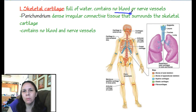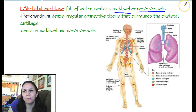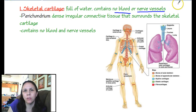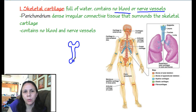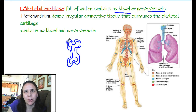It has no blood vessels or nerve vessels, so if you cut cartilage, it doesn't bleed and you shouldn't feel it. The surrounding tissues do have blood and nerves, so you'll feel damage to those. Cartilage makes our bones — it starts out kind of bone-shaped, and it's surrounded by a membrane called the perichondrium.